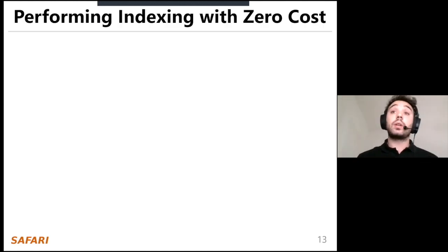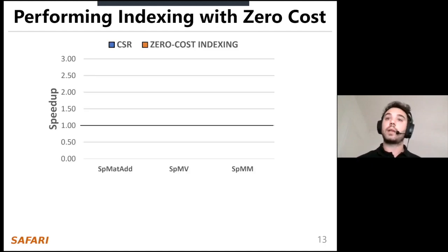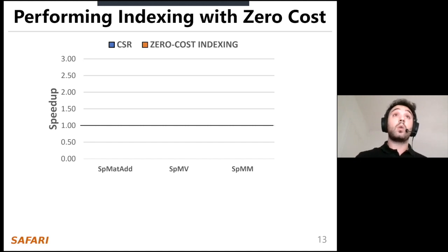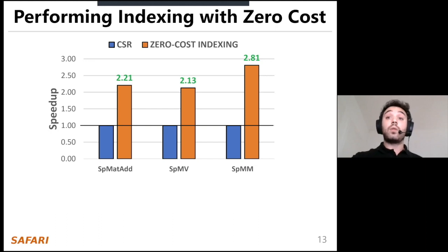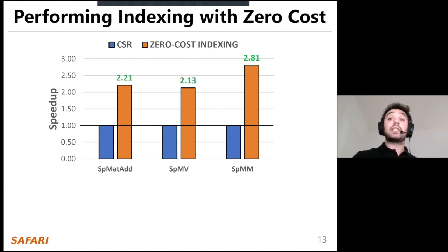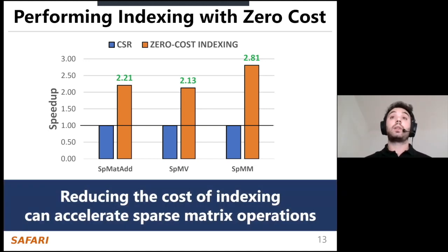To better understand the indexing bottleneck, we conducted experiments where indexing has zero cost — meaning the processor pays nothing for computation or memory accesses related to indexing. We demonstrate the performance achieved by this zero-cost indexing scheme compared to the default CSR implementation, evaluated on three workloads: sparse matrix addition, SPMV, and SPMM, averaged across 15 matrices. For all workloads, the zero-cost indexing scheme results in performance improvement, especially for SPMM where indexing is most intense.